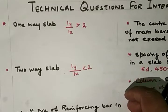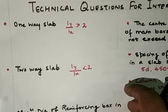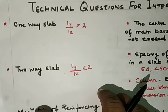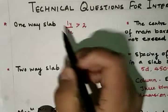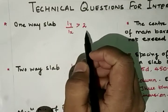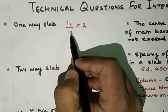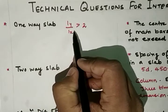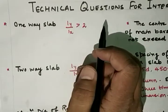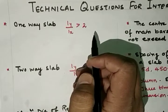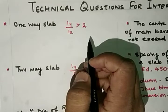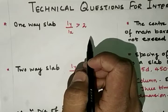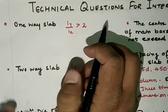Dear students, today we are going to discuss technical questions for interviews. The first topic is one-way slab. One-way slabs are those slabs in which the Ly upon Lx ratio is greater than 2, meaning the ratio of the longer span to the shorter span exceeds 2. A one-way slab is also called a slab spanning in one direction, because bending takes place only along the shorter span, so main reinforcement is provided along the shorter span.